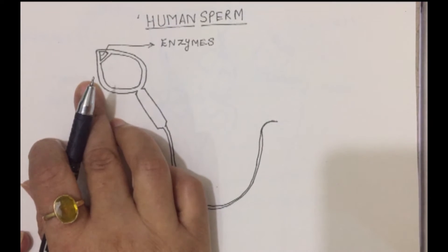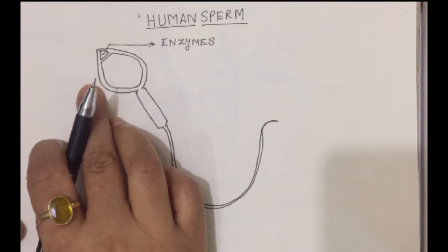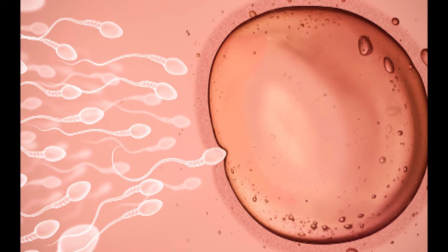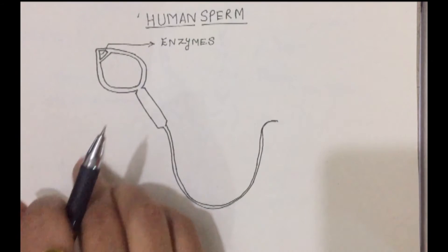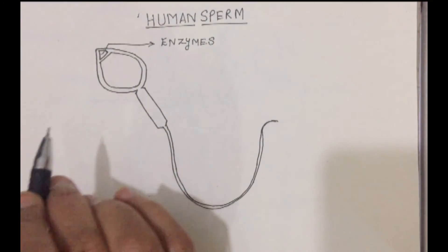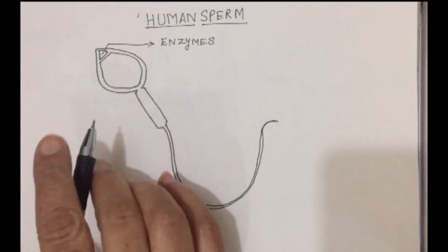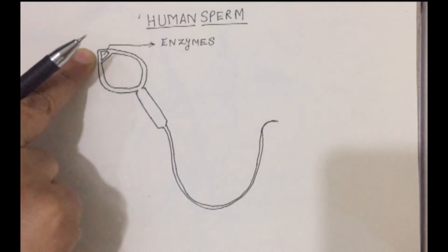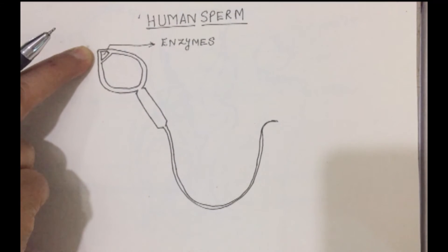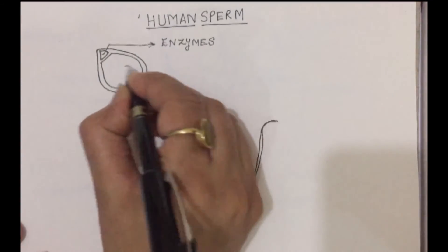The sperm has to penetrate into the ovum. When it is going to penetrate, the ovum is solid, and the nucleus in the ovum is placed deep inside. So if the sperm's nucleus has to reach the nucleus in the ovum, it has to dissolve the substance present in the ovum. The enzymes here help to dissolve the material present outside the nucleus in the ovum. Here you have the nucleus.